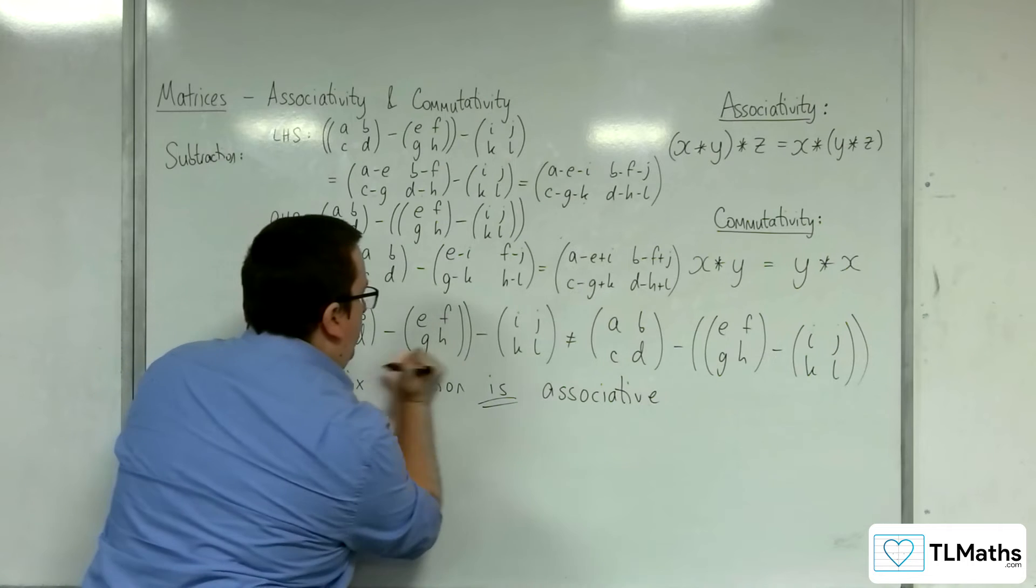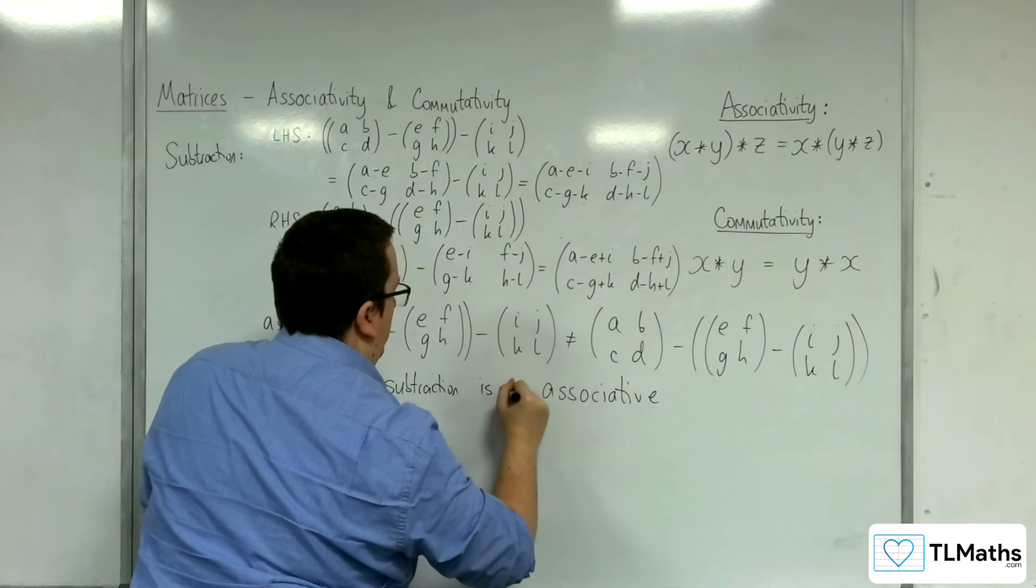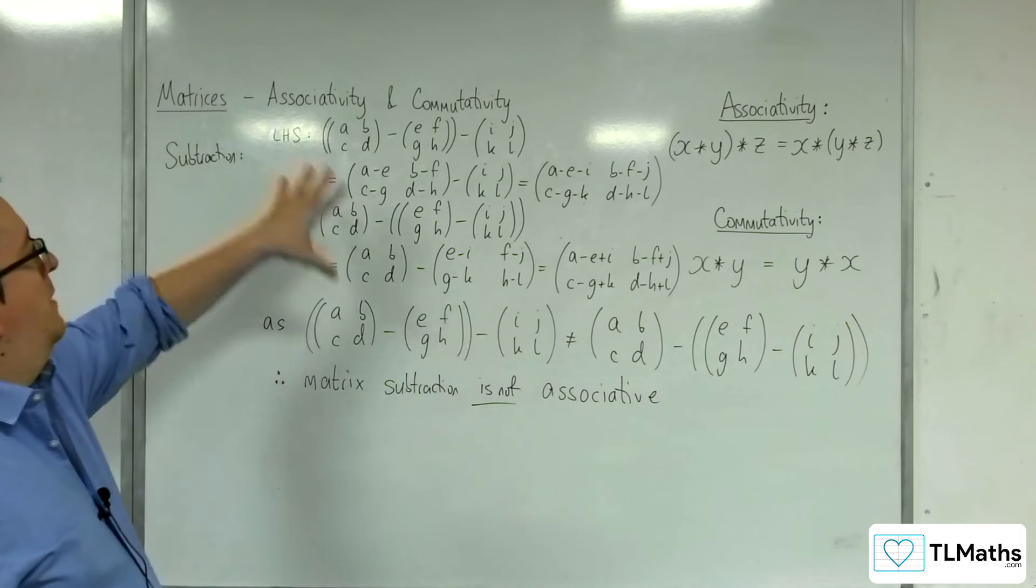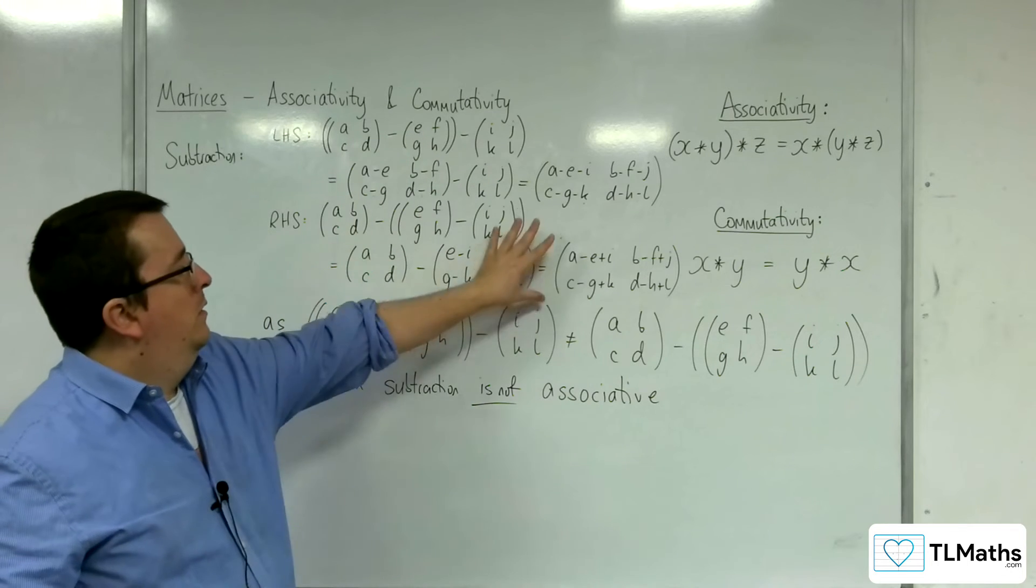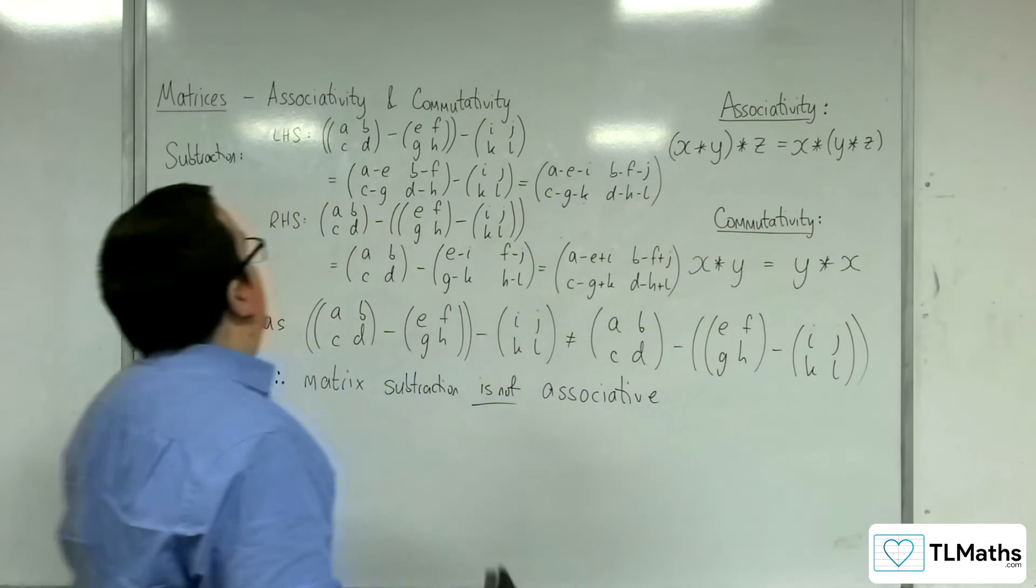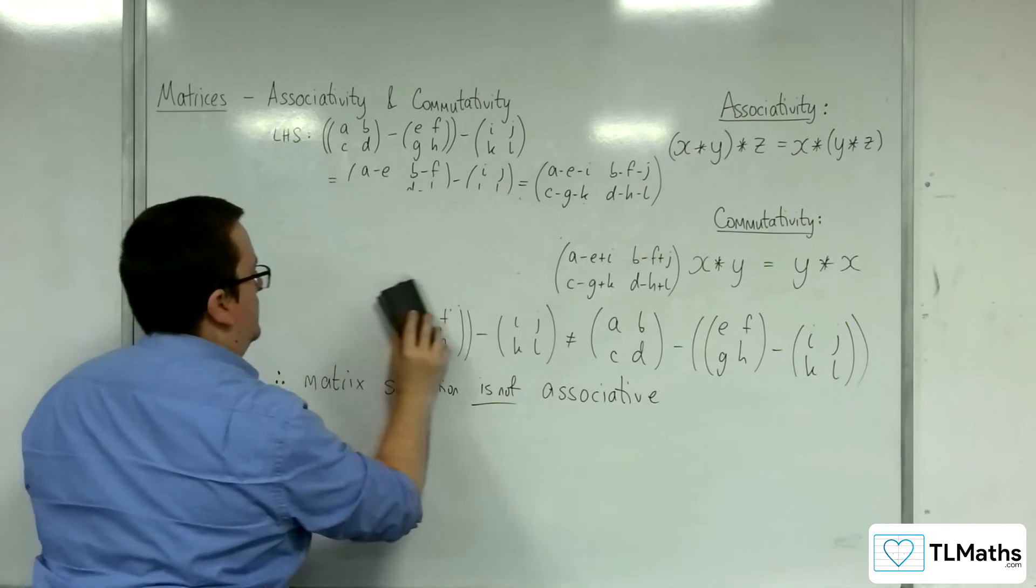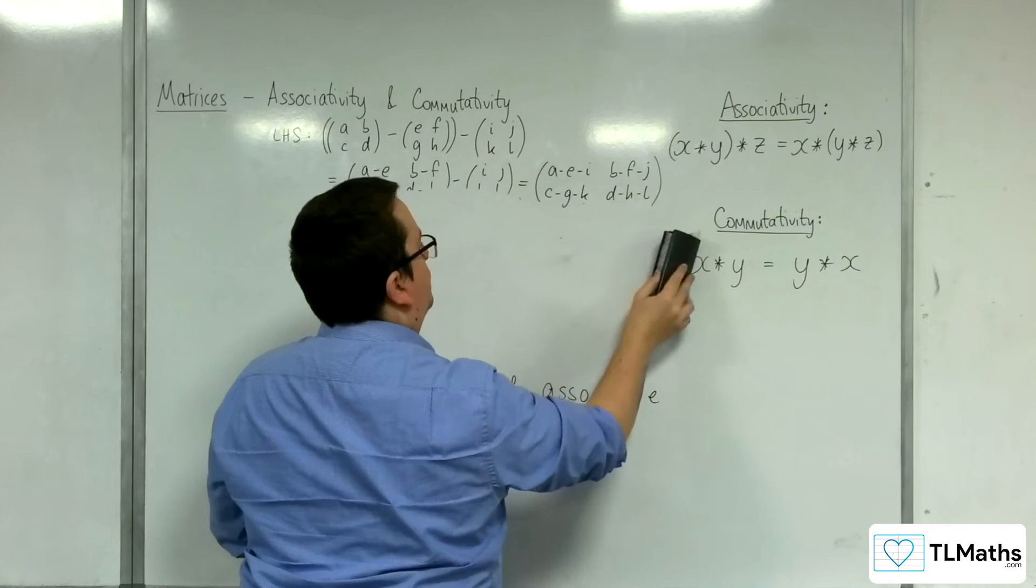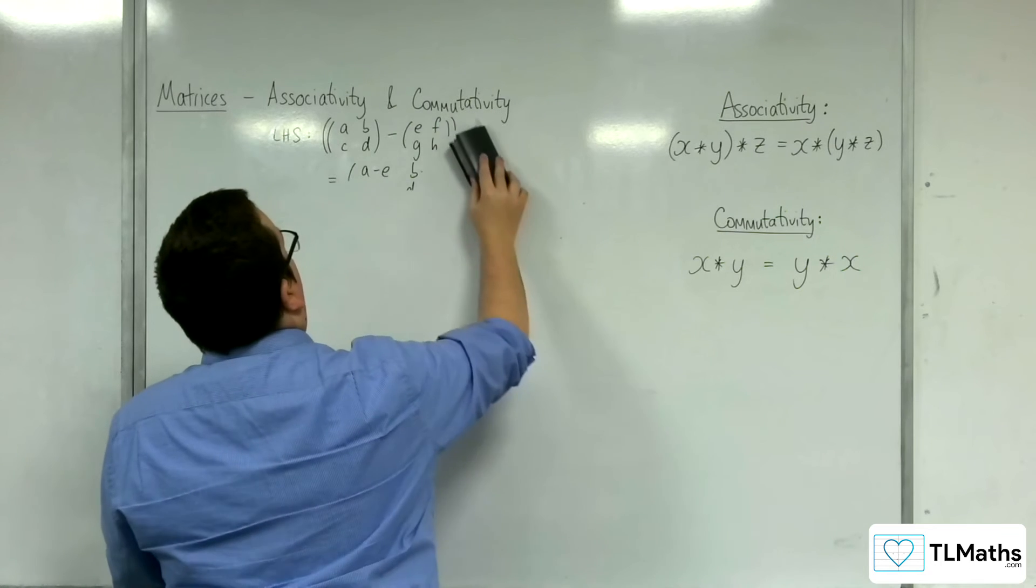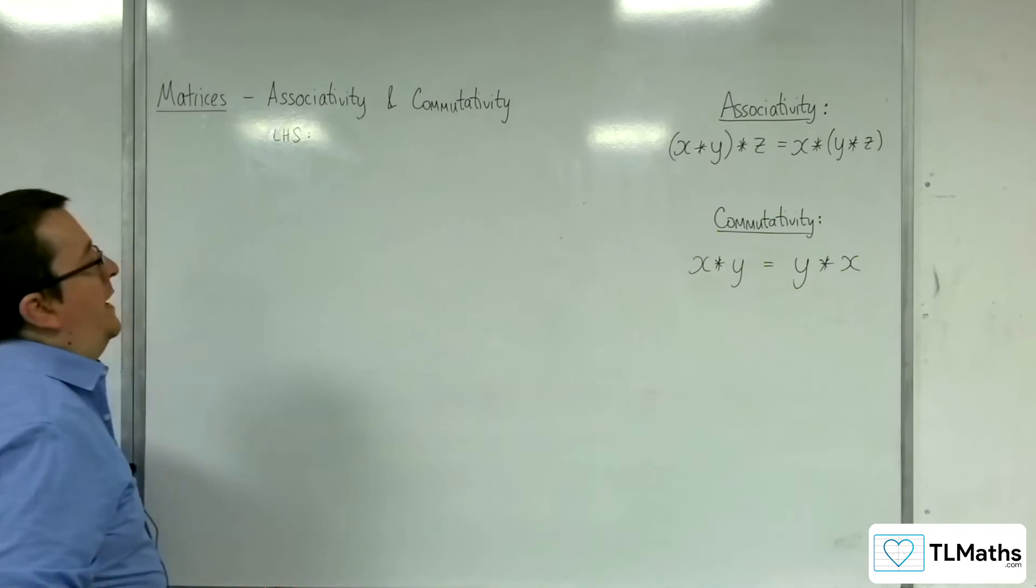So matrix subtraction is not associative. So that is what we can see from associativity. So let's take a look at commutativity now.